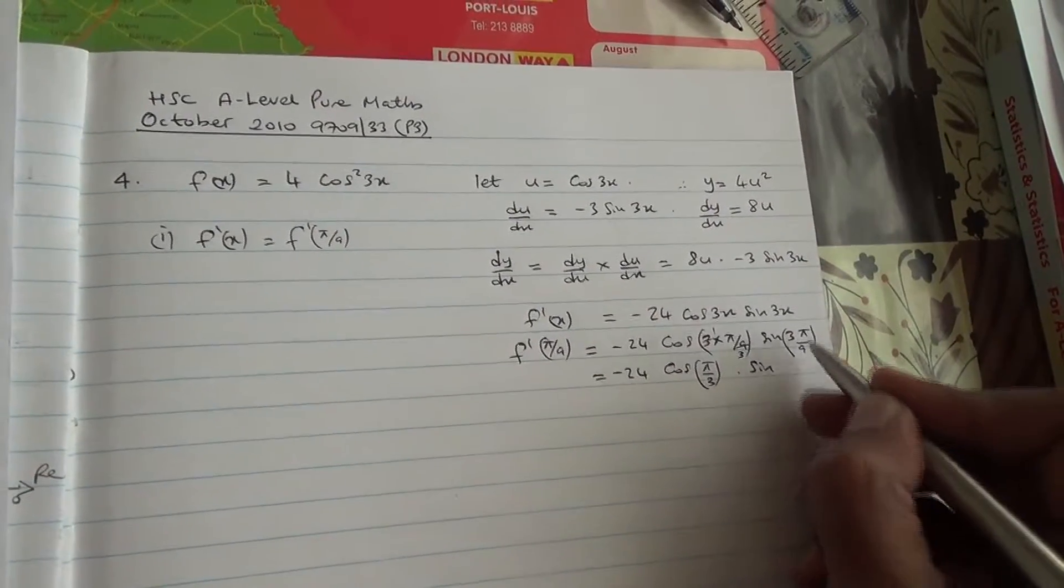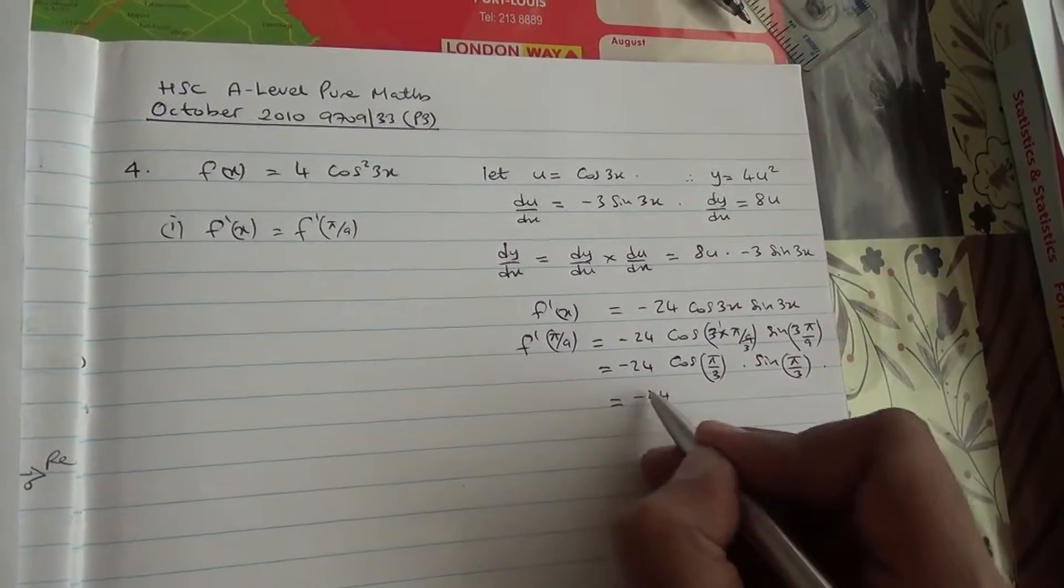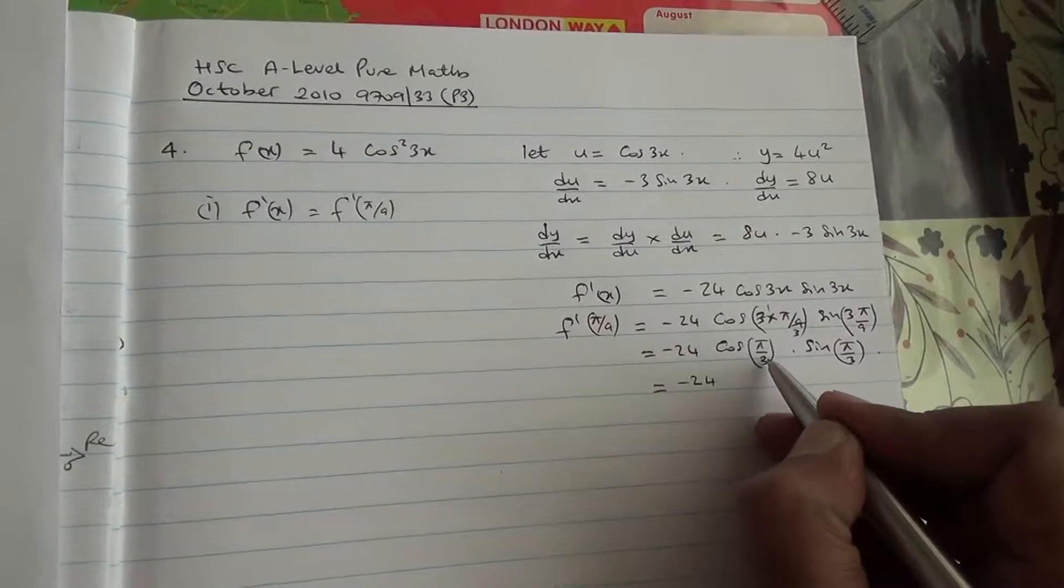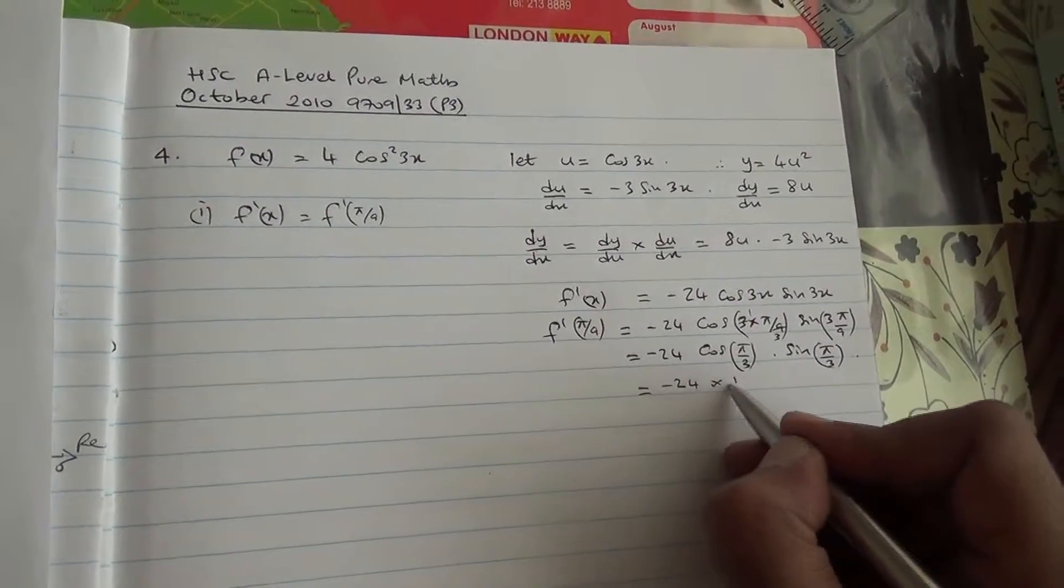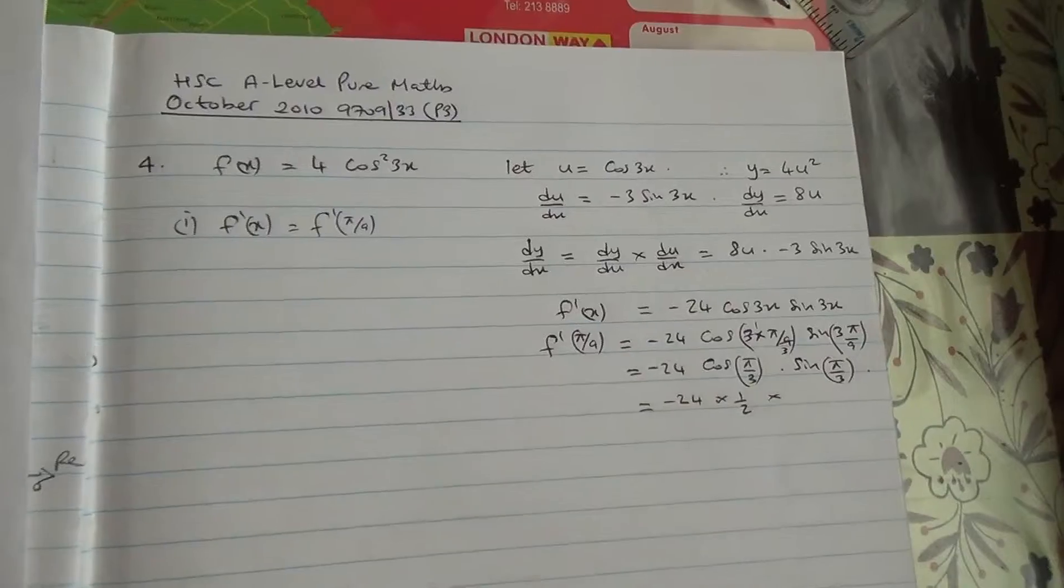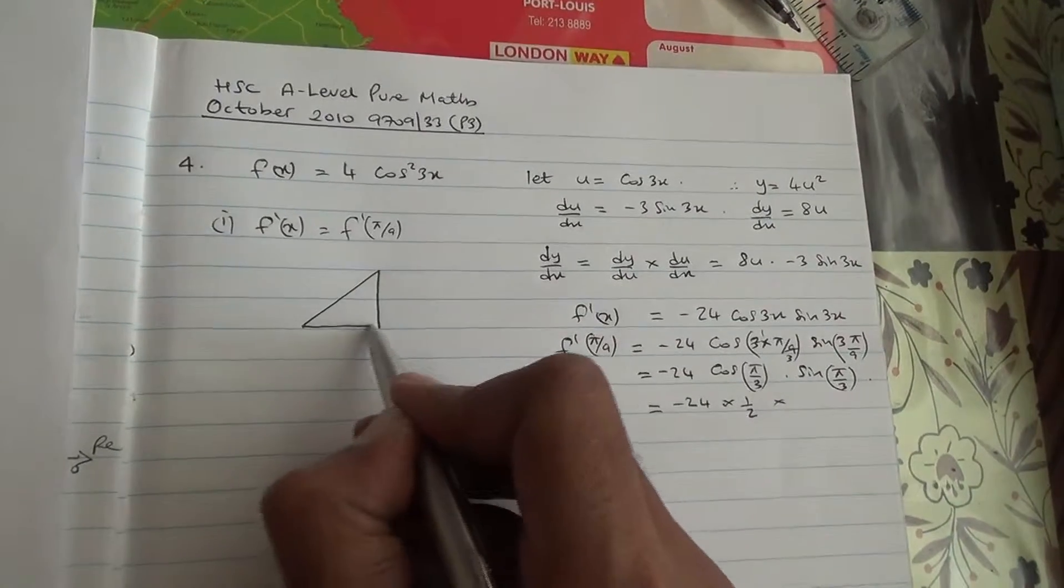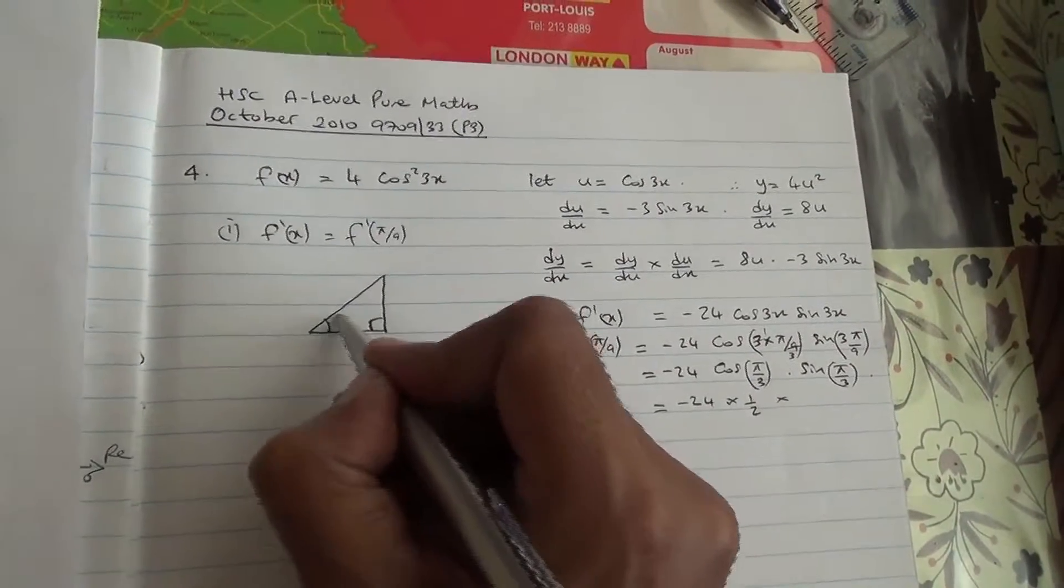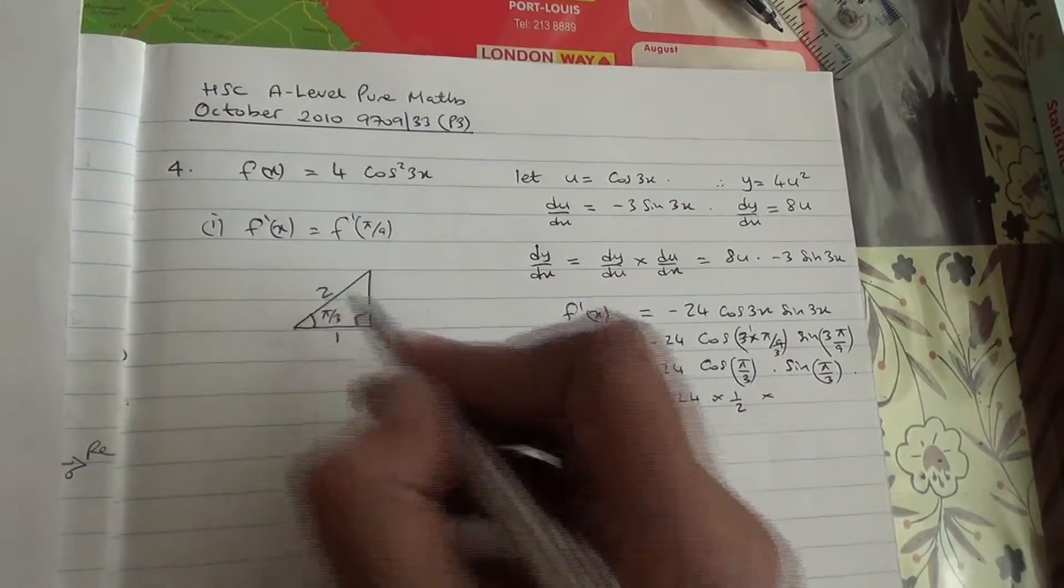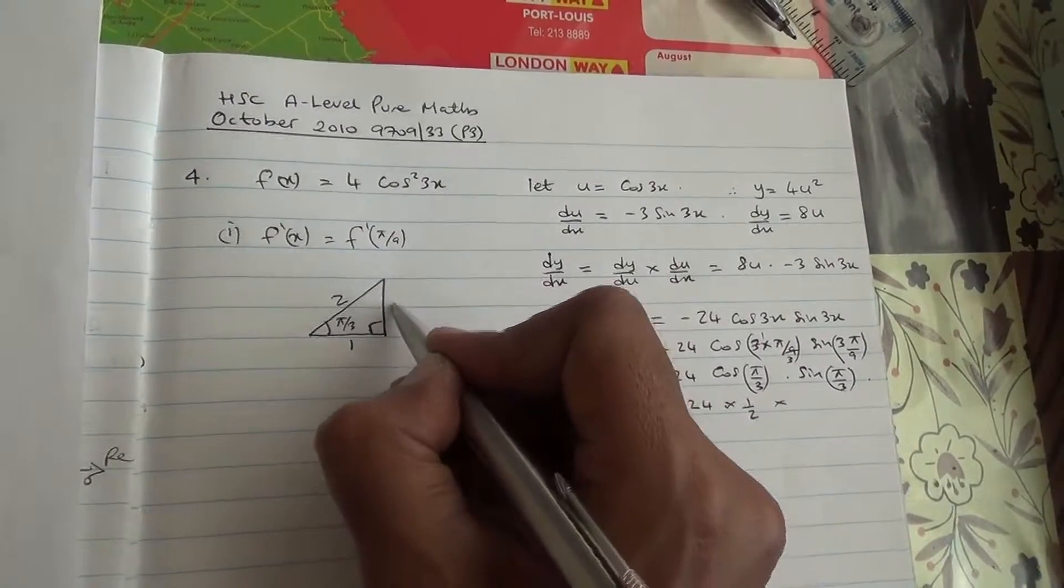And then times sin of π/3 also. So minus 24 times, what is π/3? It is 60 degrees. This is in radians. Cos of 60 degrees is half. And what is sin of π/3? Now, sin of π/3 can be easily found out. If you have a right-angle triangle here, this is π/3, which is basically 60 degrees. Cos of that is going to be 1/2. And then by Pythagoras theorem, 2 squared minus 1 squared is 3, and you do the root of that.